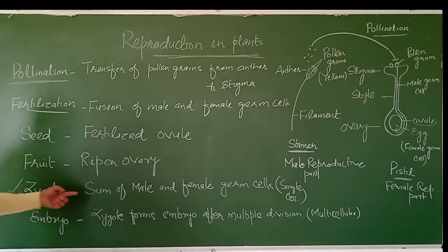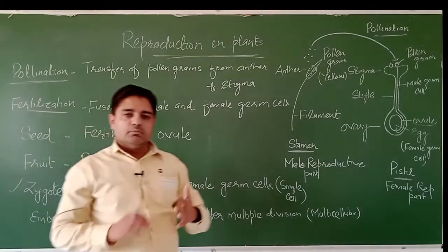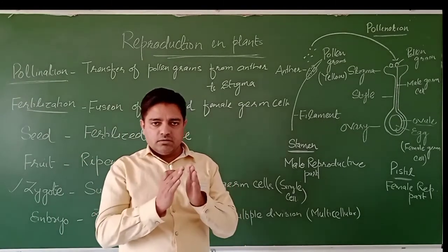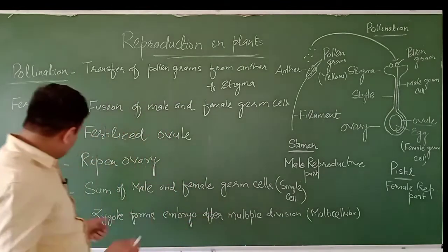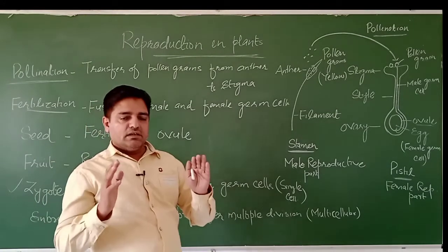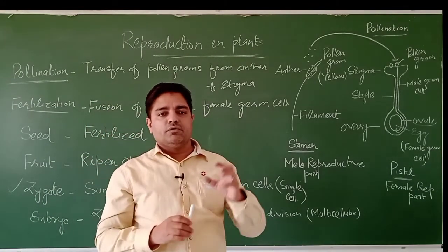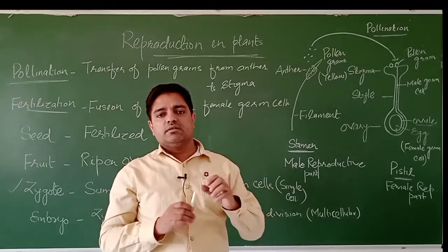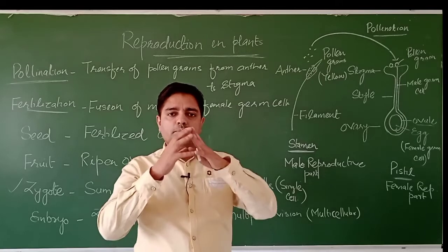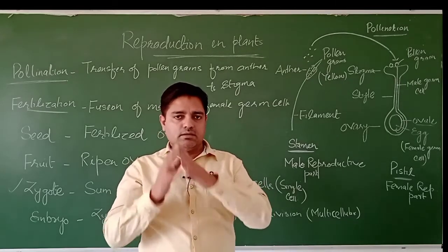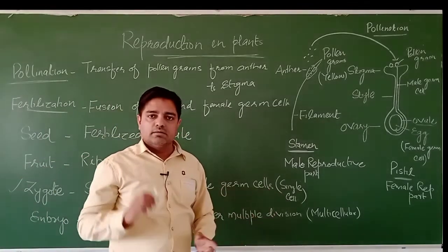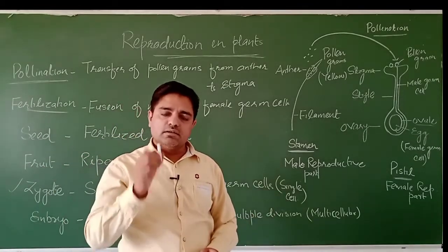The zygote is the product of the fusion of male and female germ cells. The male germ cell is a single cell and the female germ cell is another single cell. These two single cells fuse to form a bigger single cell. So the zygote is a single cell structure.